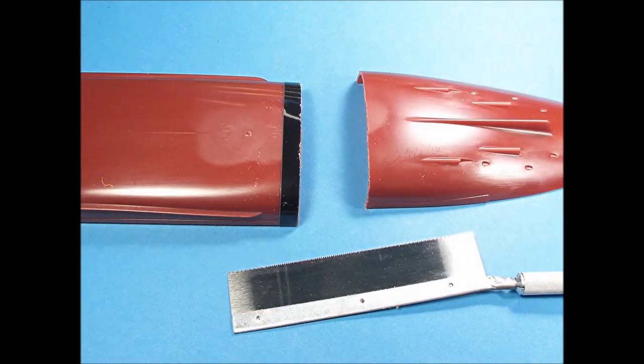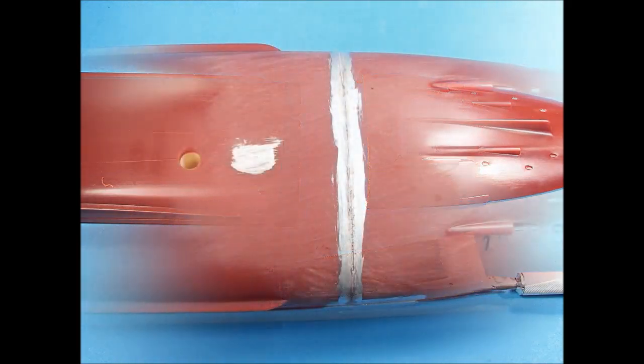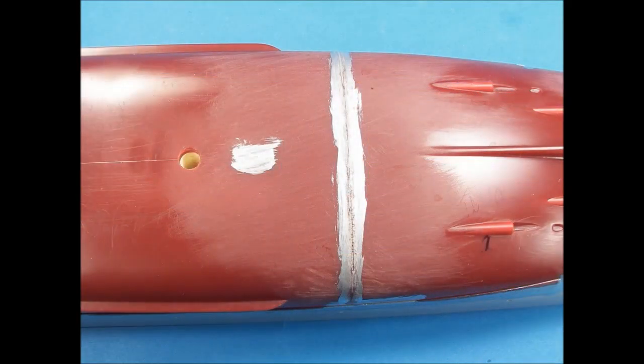Many of the Trumpeter scale ships have separate upper and lower hulls and the lower hull is usually slightly longer. A simple solution is to cut the lower hull. The excess length is almost the exact width of a saw blade. The lower hull parts were then positioned on the upper hull and several layers of superglue sealed the seam.